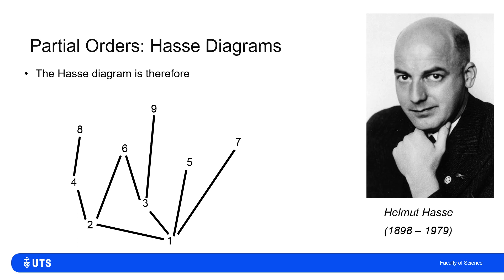And then 10, again, is a bit more complicated because 10 is divisible by 5, which is divisible by 1. And 10 is divisible by 2, which is divisible by 1. So 10 will need to go like that. So it's a little bit messier with the lines crossed. But that is one representation of the divisibility partial order in a Hasse diagram.